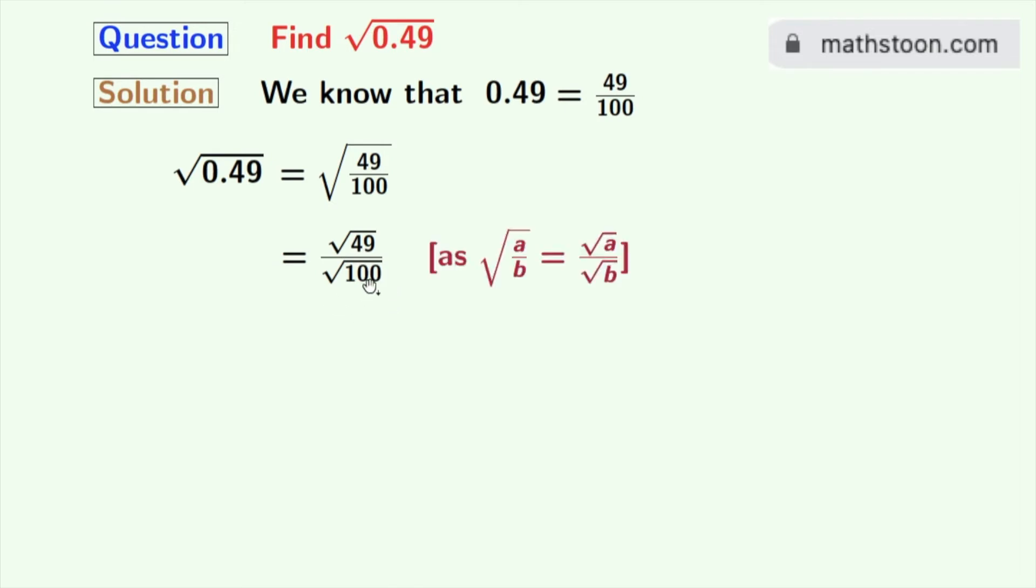Using the rule of square root of a by b is equal to square root of a by square root of b, here a is 49 and b is 100. As root over 49 is equal to 7 and root over 100 is equal to 10, so from this we get 7 by 10.